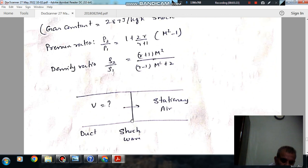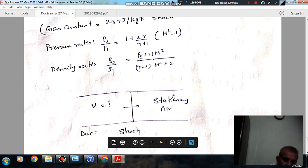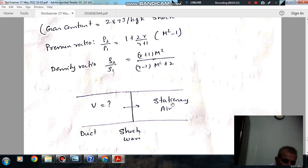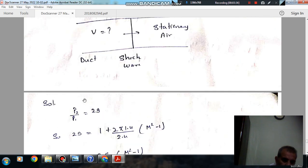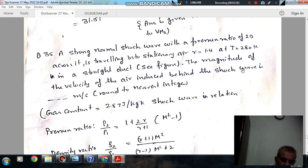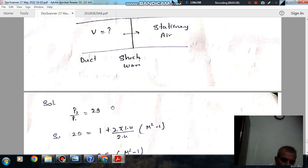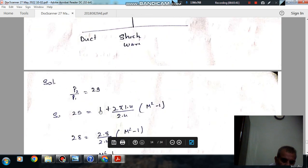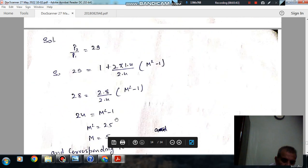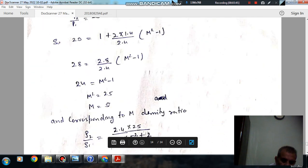This is your shock wave and this is the velocity imparted by the shock wave. As the pressure ratio is 29, so P2 by P1 is 29. Putting the value here we can find out M. M comes out as 5.